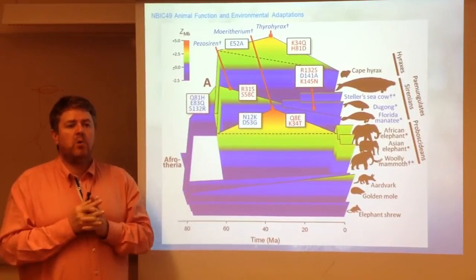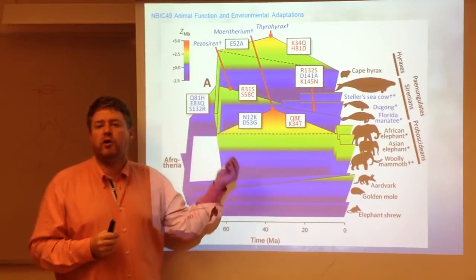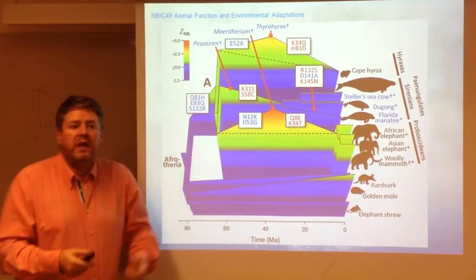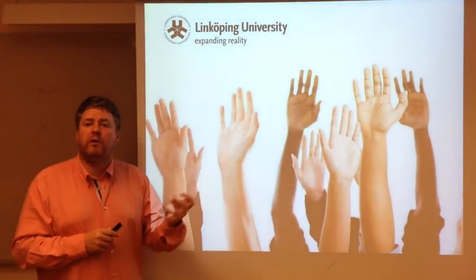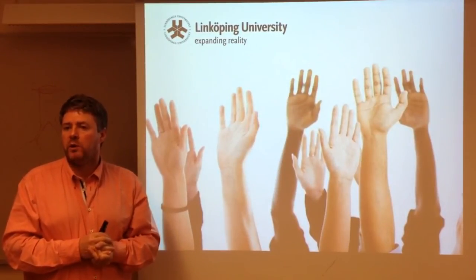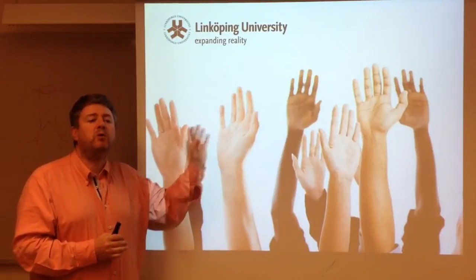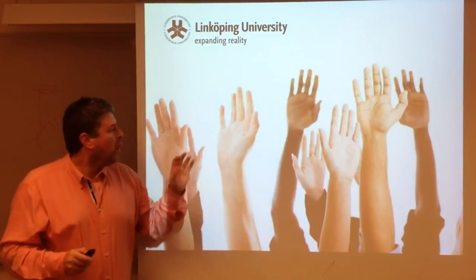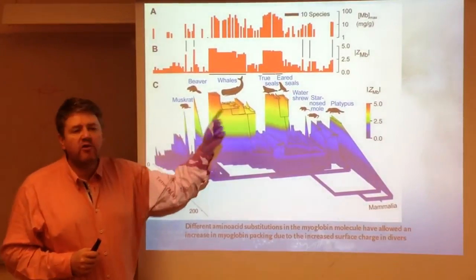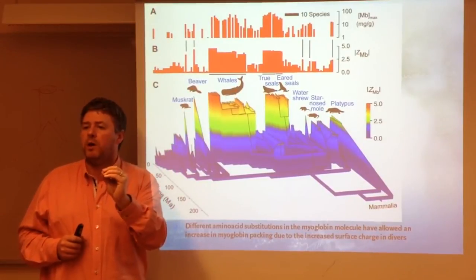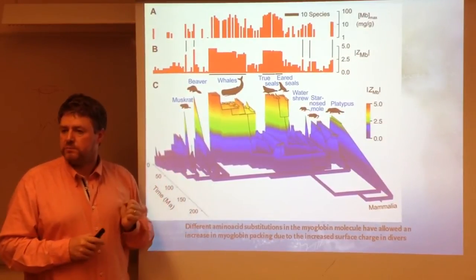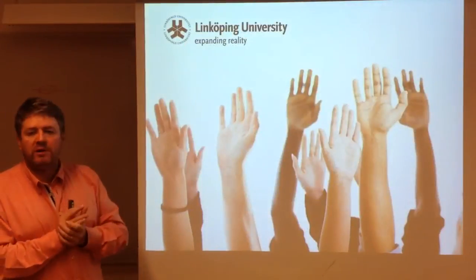The deal is that the net surface charge of myoglobin allows more myoglobin to be packed into the muscle, therefore allowing more oxygen to be stored. This is a beautiful story that wraps around the concept of phylogenetic comparative analysis discussed earlier in the course, and to my knowledge, one of the most beautiful examples of that paradigm. With this information, we can truly say that these mutations in the myoglobin molecule that lead to a larger concentration of myoglobin in muscles are adaptations to diving. Thank you very much.